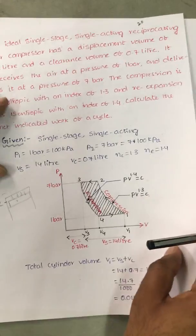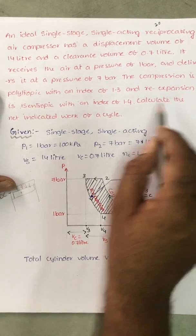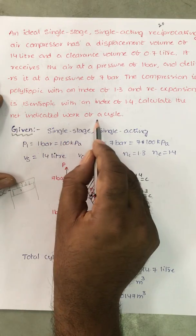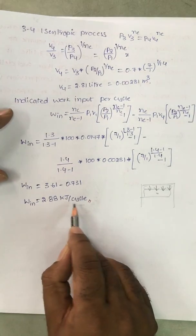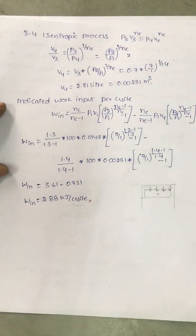They asked to calculate the net indicated work of a cycle. Per cycle they want. So we also calculated per cycle, kJ per cycle. Thank you very much.